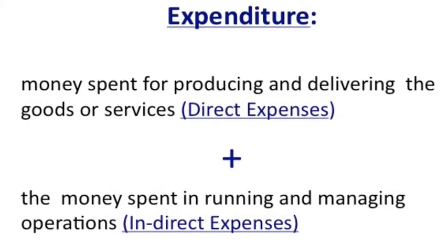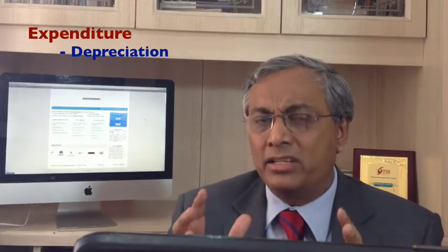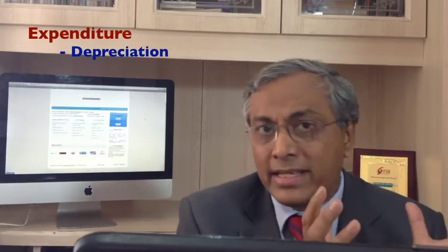Expenditure is all the money that the company has spent in producing goods and services which it has sold. This could be a variety of expenses like raw materials in the case of a manufacturing company, salaries and wages, electricity, power and fuel, factory rent, and also depreciation. Depreciation is an amount of money kept aside by the company for future contingencies — for example, to replace a machine or do major repairs — so it is also deemed as an expenditure.